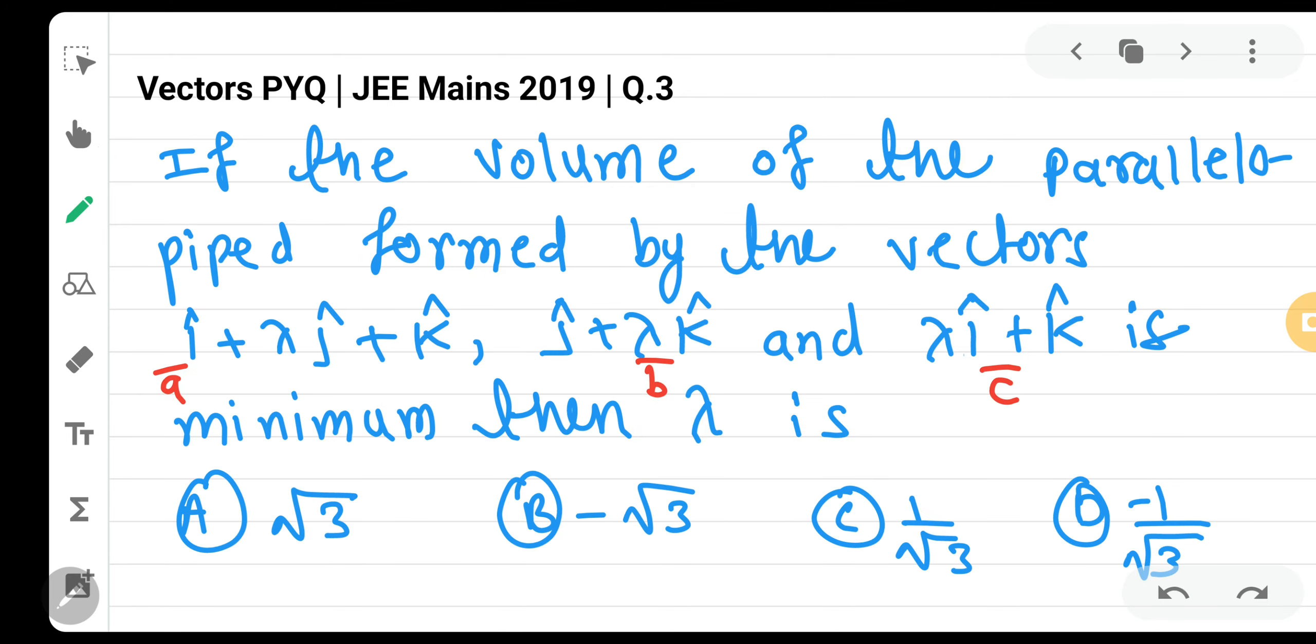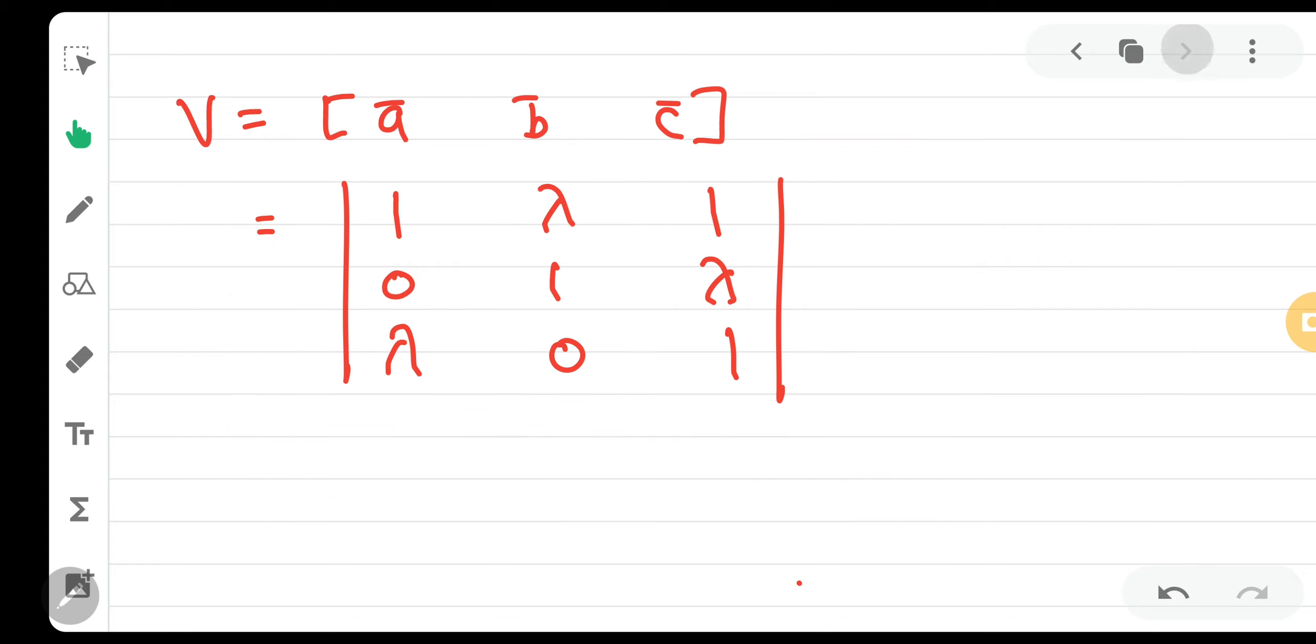So here you can have the determinant for the parallelepiped. It will be A bar, B bar and C bar. So volume is the box product. So if we solve it, 1 minus lambda squared plus lambda minus lambda cube. Simply solve the determinant.